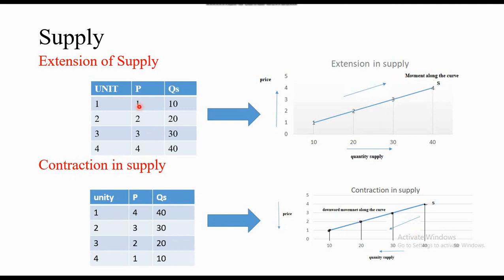If we move upward along the curve, that is extension — price increases and quantity supplied increases. If we move downward along the curve, supply goes from, say, 40 to 10 — that is a backward or downward movement. The supply curve is a positive curve, always upward sloping, because supply and price have a positive relationship.